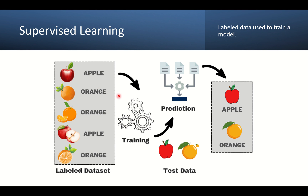In supervised learning, we use labeled data to train the model — meaning we assign a label to each data point. Here we have different fruits with labels assigned: apple, orange, and so on. We train the machine learning model on this labeled data, then provide test data and the model makes a prediction — telling us that the red one is an apple and another is an orange. Supervised learning is used in areas like spam email detection, fraud detection in banking, and diagnosis of different diseases.